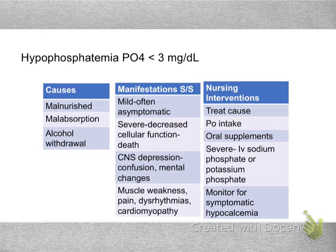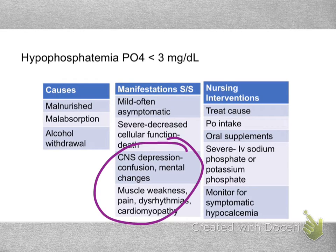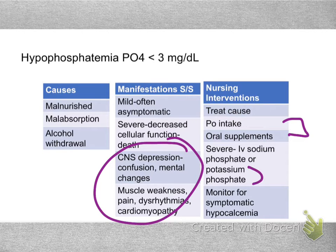Low phosphorus often results from malnourishment or malabsorption, and symptoms are often minimal. But in severely low phosphorus over a longer period, you may see neurological deficits, muscle weakness, muscle pain, and risk for dysrhythmias. Treatment is mainly oral — increasing dietary intake — but we can give IV phosphorus in severe cases. IV phosphorus comes combined with either sodium or potassium, so the provider chooses based on the patient's other deficits: potassium phosphate if they also have low potassium, or sodium phosphate if they have high potassium or low sodium.